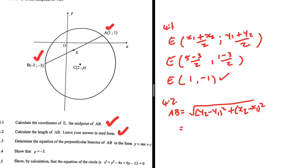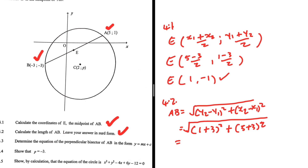This is going to equal the square root of — taking A as our second point, the Y value at A is 1. So we have (1 plus 3) squared plus (5 plus 3) squared. That gives us 4 squared plus 8 squared. Putting that in the calculator, I'm getting 4 square root of 5. So this is the length of AB: 4 square root of 5 units.